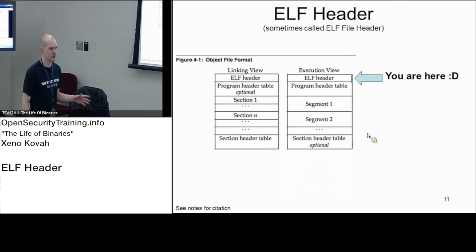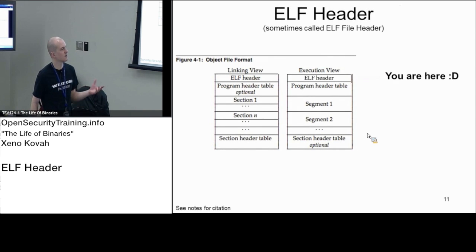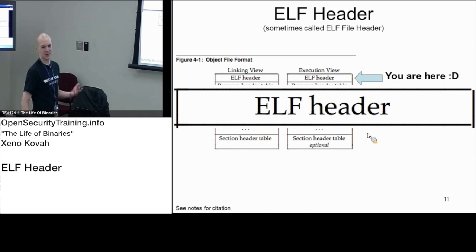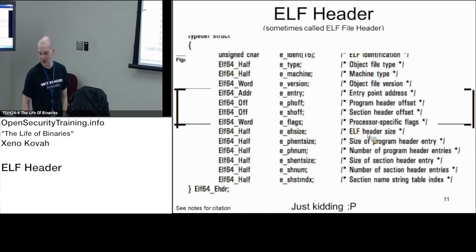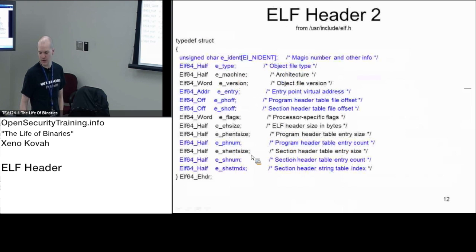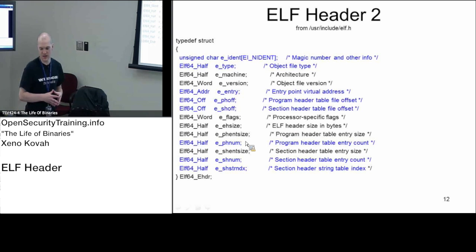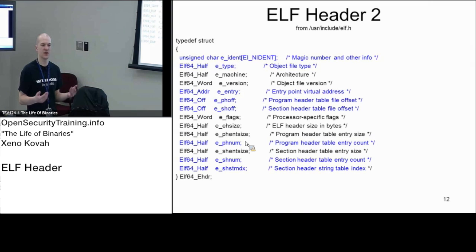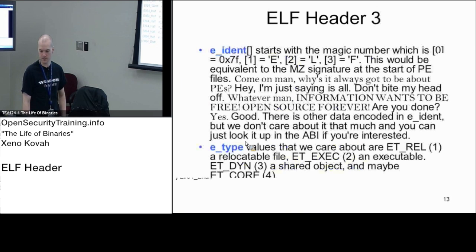We're going to drill down into the ELF header. This is what the ELF header looks like — we've got some offsets which are going to be file offsets, and we've got some fields which are going to be two-byte things. There are about three things that are equivalent to either the DOS header or the NT header, and the other stuff here is really just saying how do I get to the program headers or how do I get to the section headers.